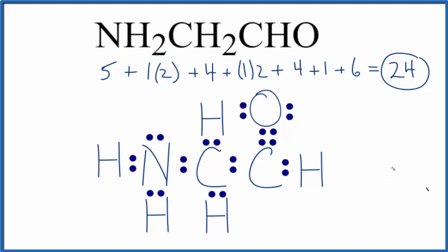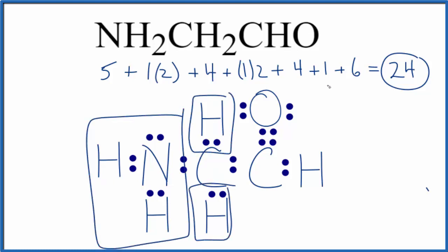If you wanted to know the molecular geometry with respect to this central carbon atom, we have one, two, three, and then four groups attached to it, so this would end up being tetrahedral with respect to the central carbon.